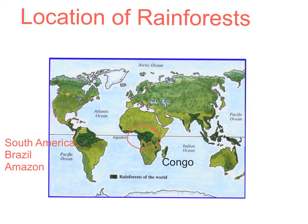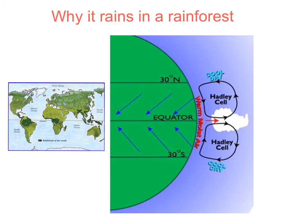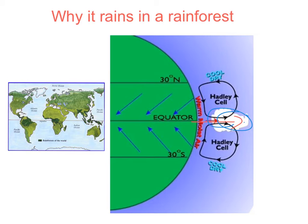Here is the Congo rainforest. The equator is the hottest part of the world because the sunlight reaches there before anywhere else. This creates hot air that rises. As it rises, it cools and condenses to form rain. It rains every day and the average temperature is 28 degrees Celsius.